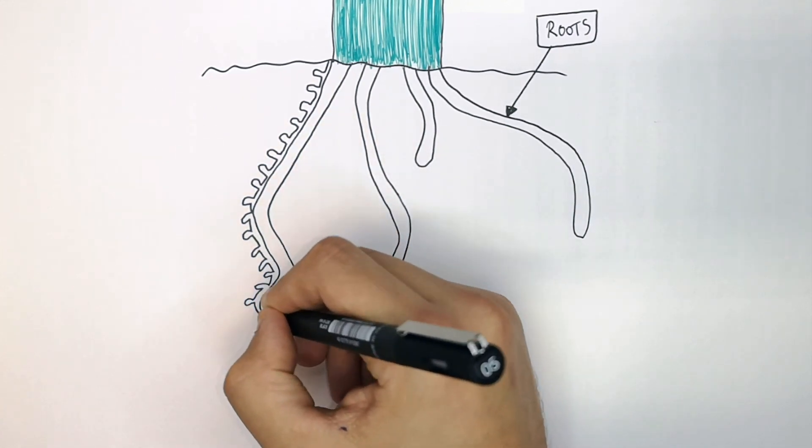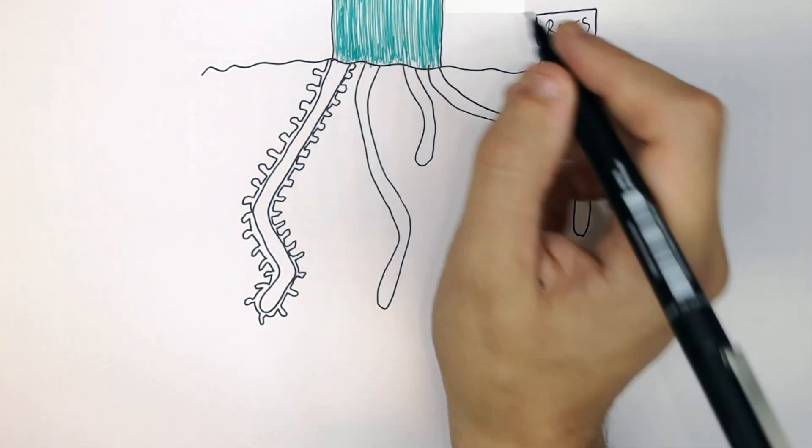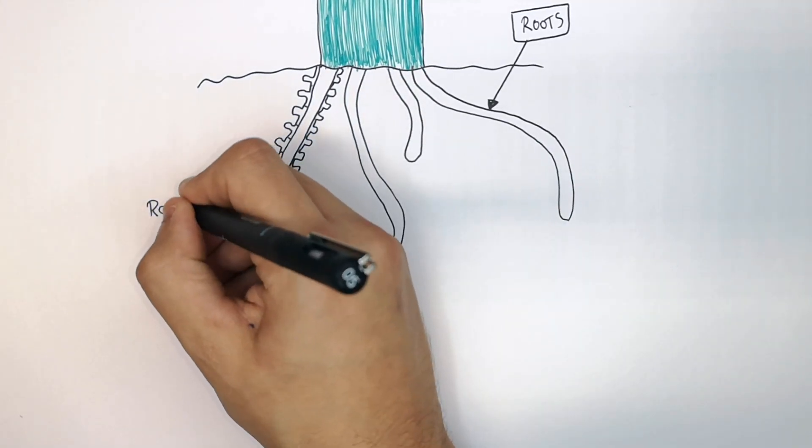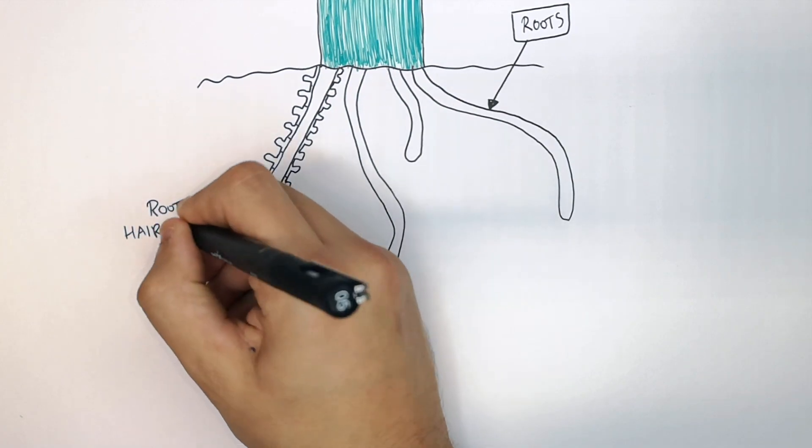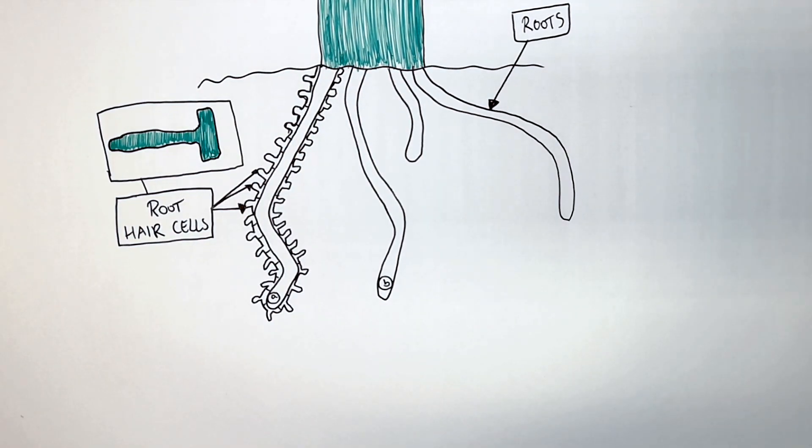That's what I'm drawing now, the root hair cells. Root hair cells increase the surface area for the absorption of water and mineral ions. So the root hair cells have got a large surface area as you can see. This here is an example of a root hair cell.